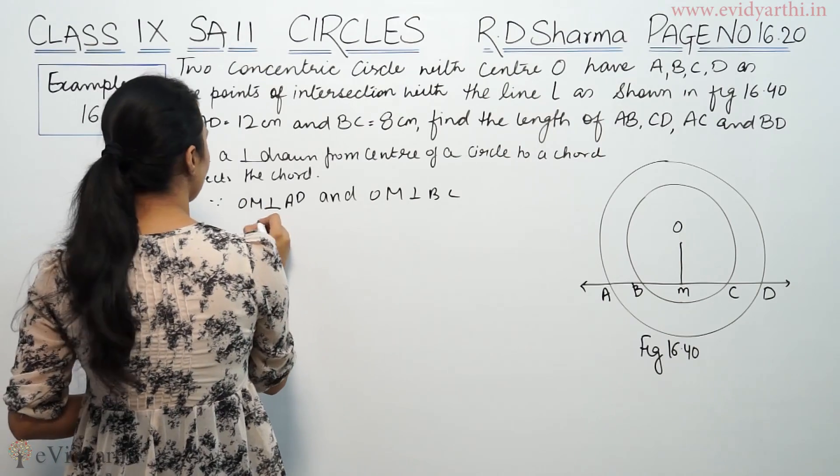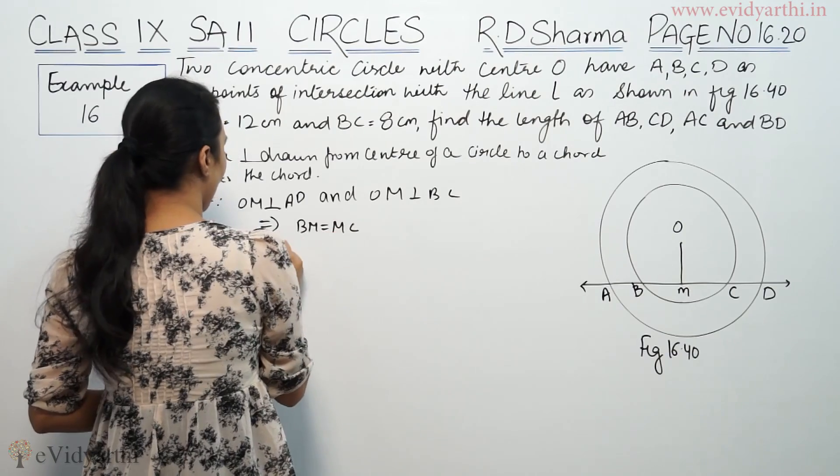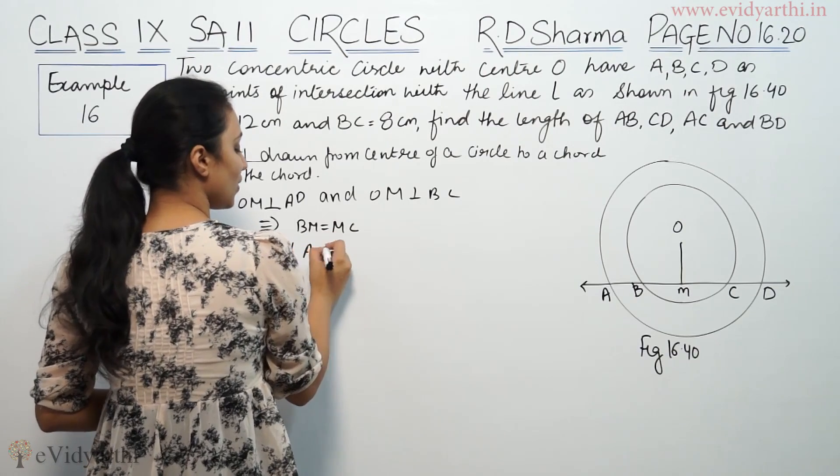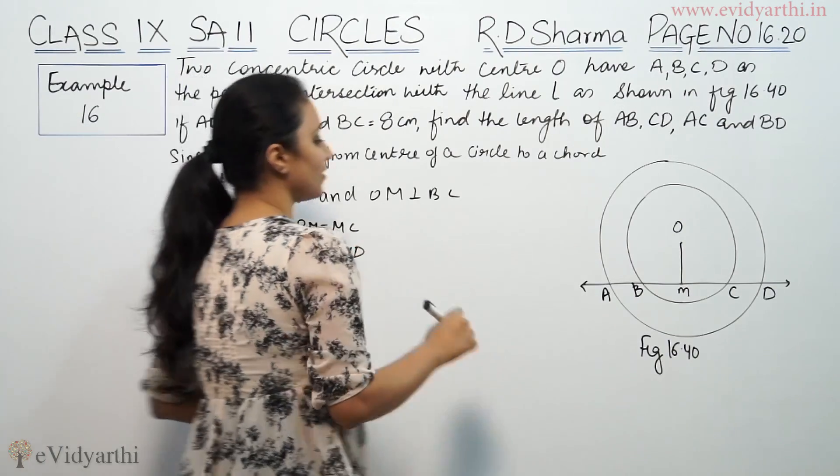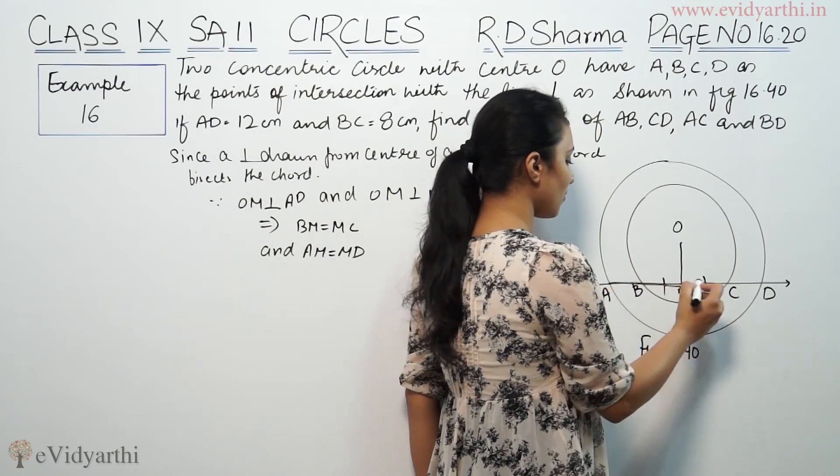Therefore, this implies that BM is equal to MC and AM is equal to MD. The reason? If this chord is perpendicular, it will divide it.